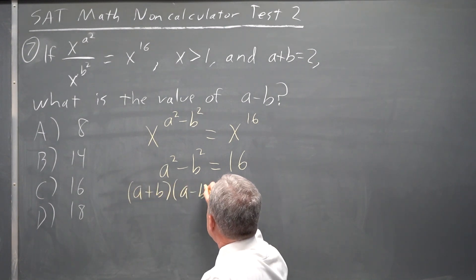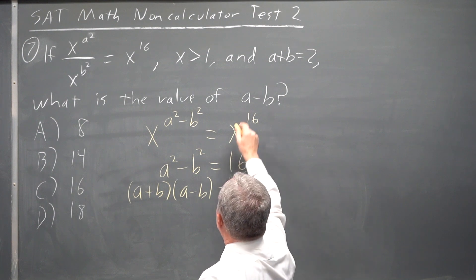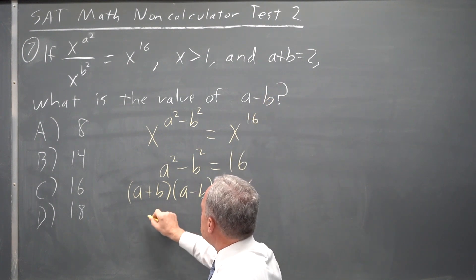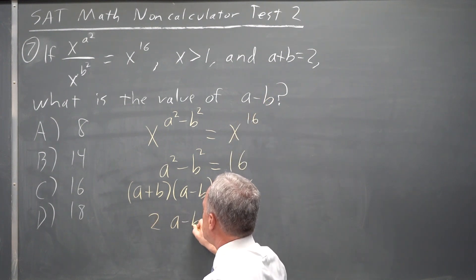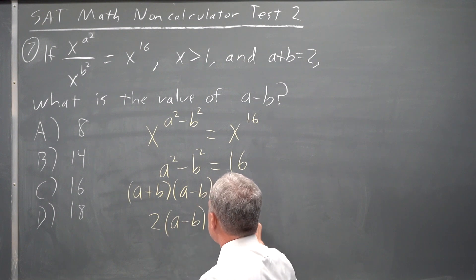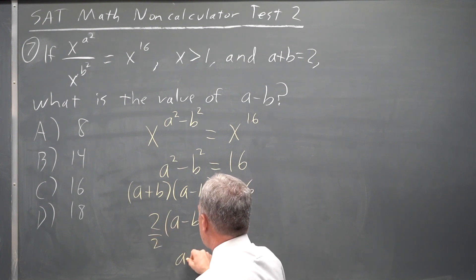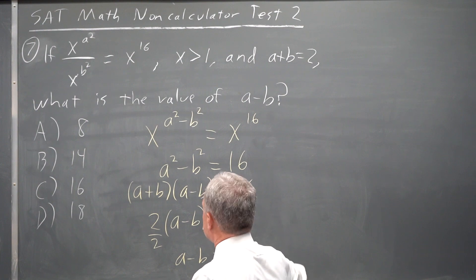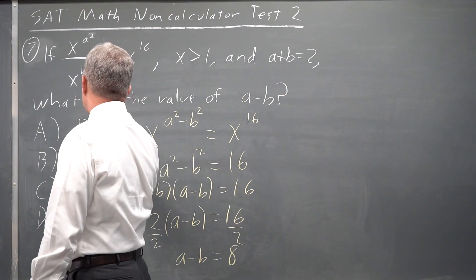So I have a plus b, a minus b equals 16, and they said up there that a plus b equals 2. So that's twice a minus b equals 16. Divide both sides by 2, and you get a minus b equals 8, which is choice A.